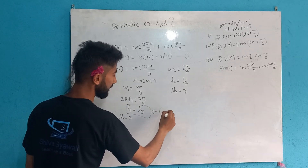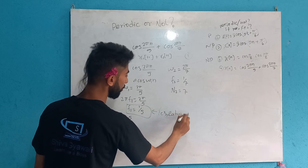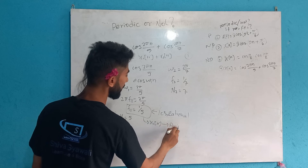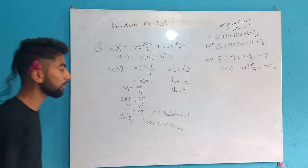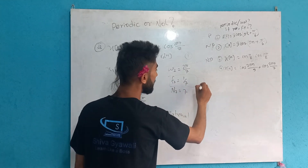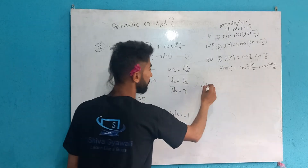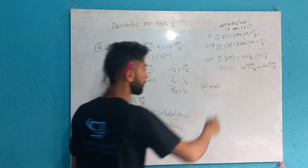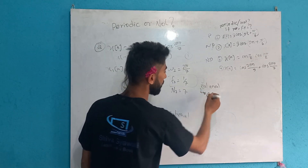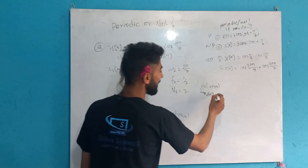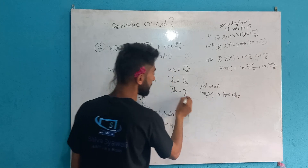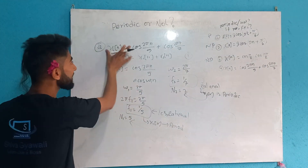This is a rational number, so the signal is periodic with the corresponding period. For x2[n] = cos(2πn/7), similarly f₂ = 1/7, which is also a rational number. So x2[n] is periodic with period 7.